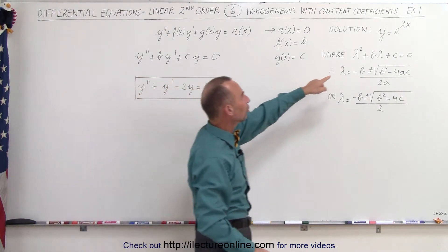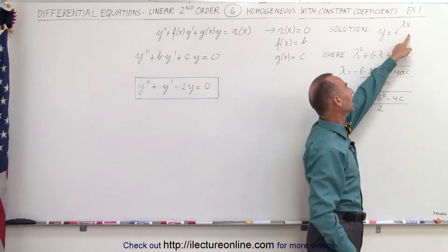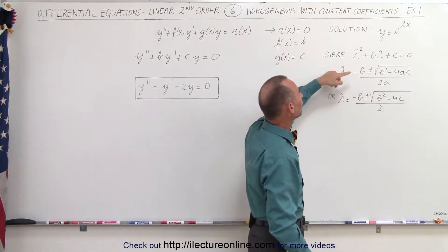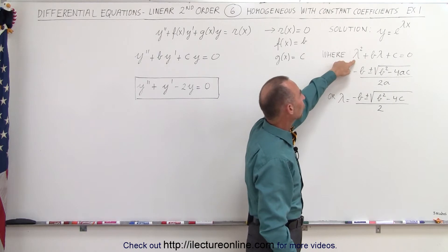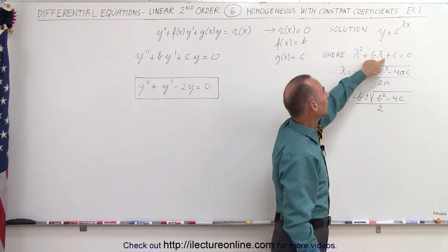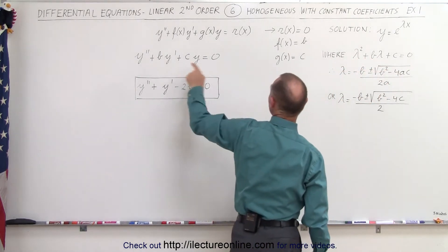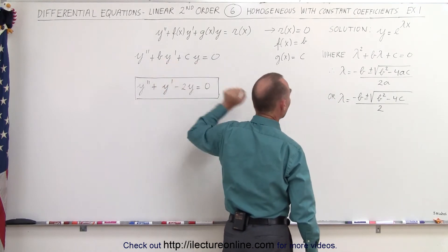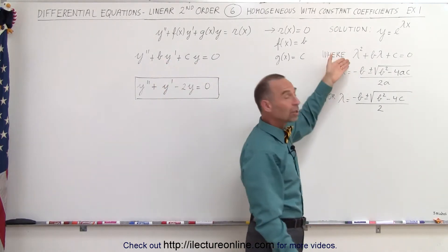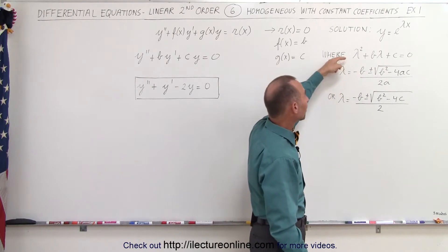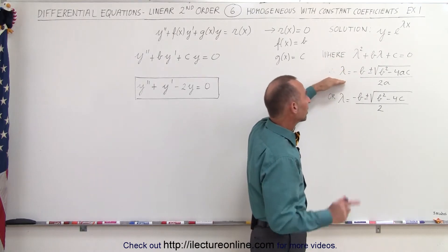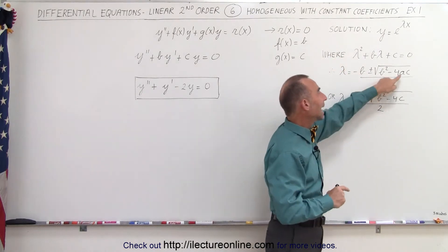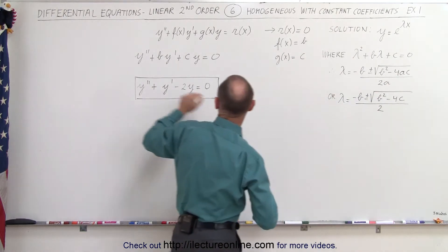We know that the solution will be in the form of y equals e to the lambda x, where lambda can be found by solving lambda squared plus b times lambda plus c equals zero. Remember, b and c are the coefficients in front of y prime and y, and it looks just like a quadratic equation, so we can solve for lambda like a quadratic equation. In this case, we know that a equals 1.